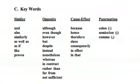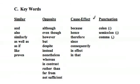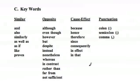Some key words that help with sentence structure: words suggesting similarity include or, and, also, similarly, as well as, as if, like, or proves. Words suggesting opposite construction include although, even though, however, but, despite, instead, nonetheless, whereas, in contrast, rather than, far from, not sufficient. Cause-effect words are generally similar construction: because, hence, therefore, since, consequently, in effect, that. Punctuation suggesting similarity — often definitional — includes colon, semicolon, and a comma without any other conjunction.